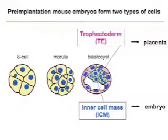The first cell differentiation event during mouse development takes place before the blastocyst has implanted the intrauterine wall. These pre-implantation embryos have two distinct cell types by the early blastocyst stage: the trophectoderm, or TE, which is required for implantation and will form the placenta later in development, and the inner cell mass, or ICM, which will form the embryo proper.